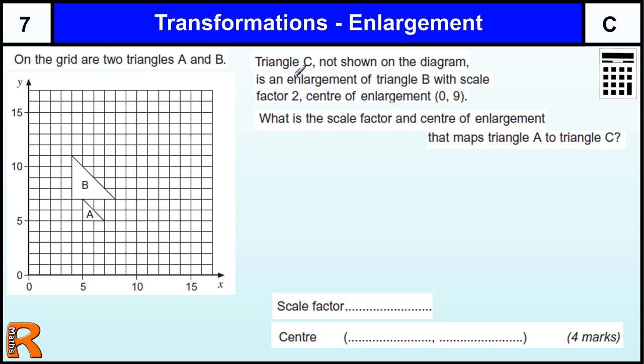Well, triangle C is not shown on the diagram, but it is an enlargement of triangle B with a scale factor 2, center 0, 9. So it is at 0, 9. And if we draw a line on there from there we can go, it is an enlargement of triangle B so it is going to be along there somewhere and along here.